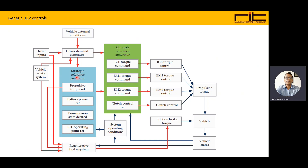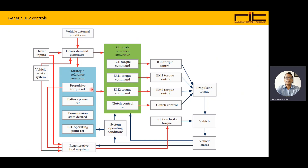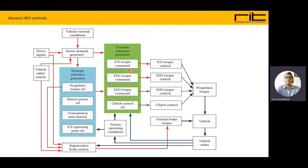The strategy reference generator outputs the propulsive torque reference, battery power reference, transmission state desired, and IC engine operating point reference. It then gives input to the control reference generator, which produces IC engine torque command, machine torque command, and clutch control reference. These are given to the IC torque control, machine one torque control, machine two torque control, and clutch control, which feed into the propulsion torque system, which drives the vehicle.